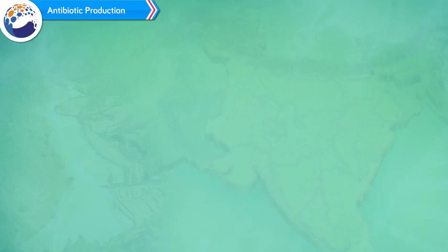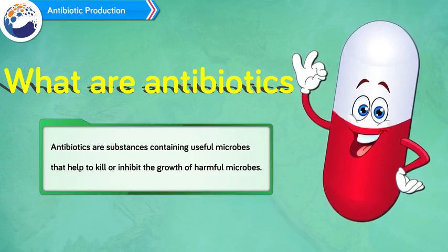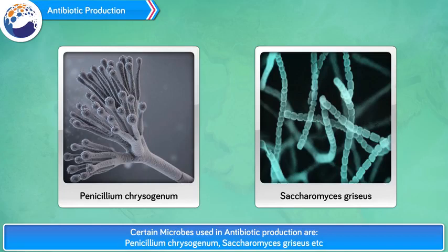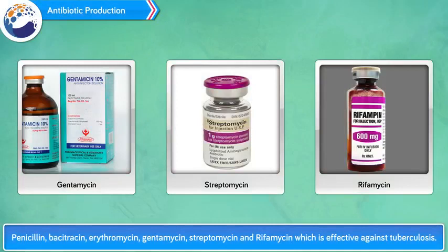Antibiotic production. Many diseases are controlled due to antibiotics. What are antibiotics? Antibiotics are substances containing useful microbes that help to kill or inhibit the growth of harmful microbes. Certain microbes used in antibiotic production are Penicillium chrysogenum, Saccharomyces gracious, etc. Few examples of antibiotics are penicillin, bacitracin, erythromycin, gentamicin, streptomycin, and rifamycin, which is effective against tuberculosis.